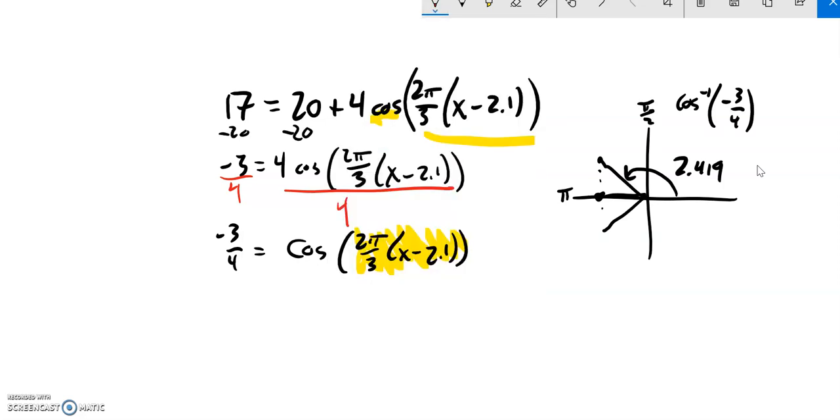So to get this other angle then, this one that's right here, notice that the whole rotation is 2π, so I'm going to go 2π minus that 2.419. That 2.419 is this angle right here, it's like a mirror of that. So if I go full rotation minus that, that'll give me this part of the rotation right here.